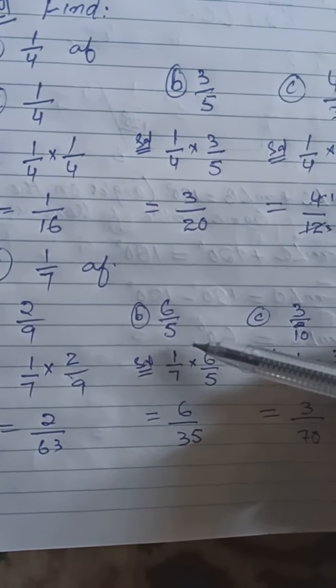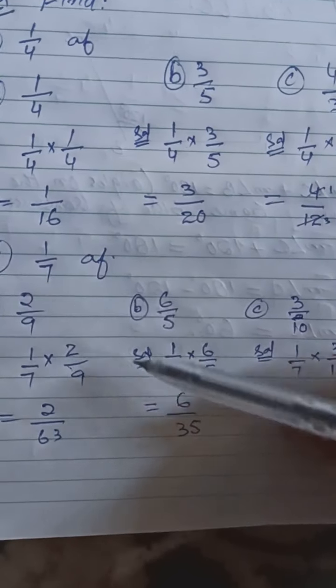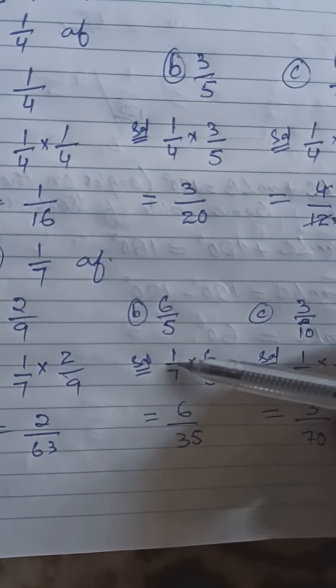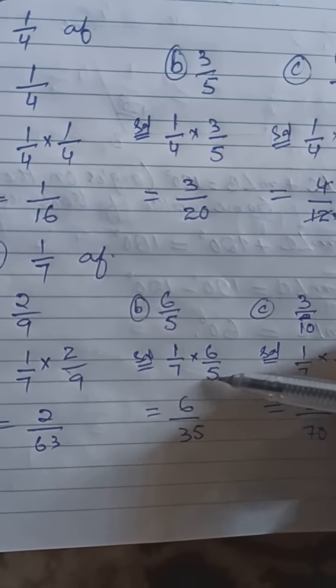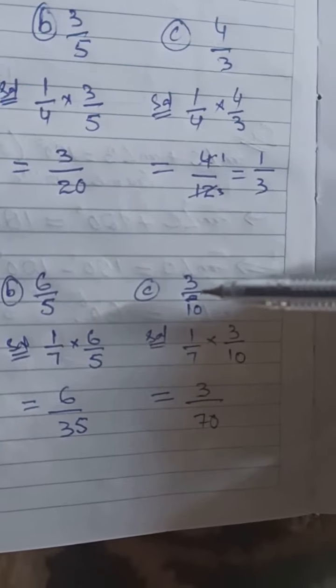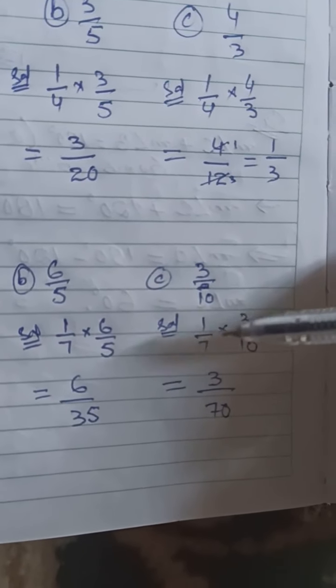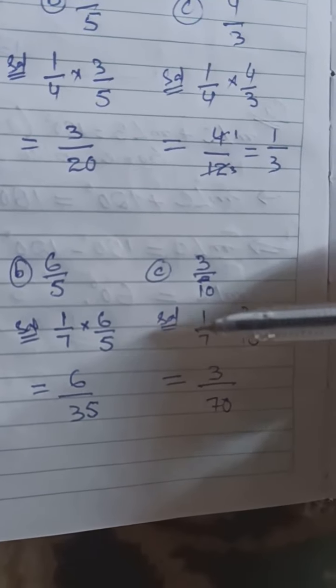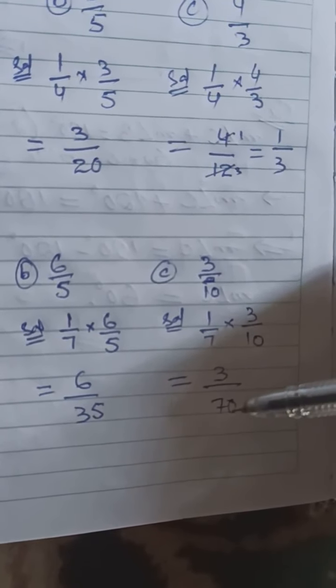What is the 6 by 5? What is the 1 by 7? 1 by 7 into 6 by 5. 6 by 1 is 6, 7 by 5 is 35. What is the 3rd part? 3 by 10. What is the 1 by 7? 1 by 7 into 3 by 10. 3 by 1 is 3, 7 by 10 is 70.